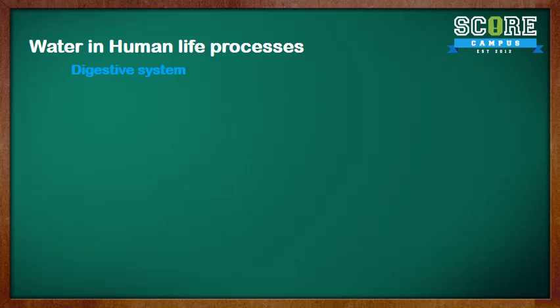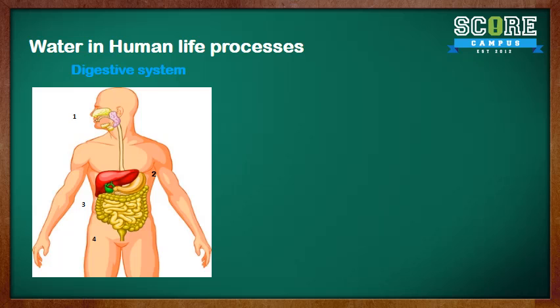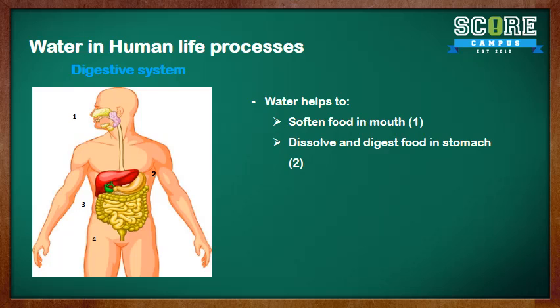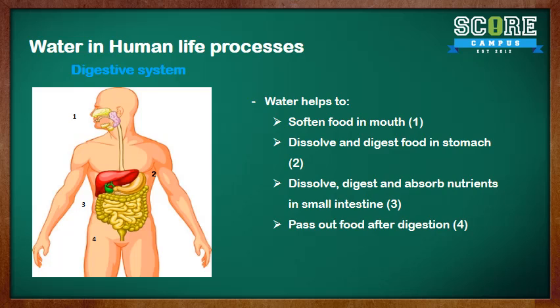Let's look at the digestive system. Water helps to soften the food in our mouth with saliva. Water helps to dissolve and digest food in the stomach. It also helps to dissolve, digest, and absorb nutrients in the small intestine. And it's needed after digestion to pass out.